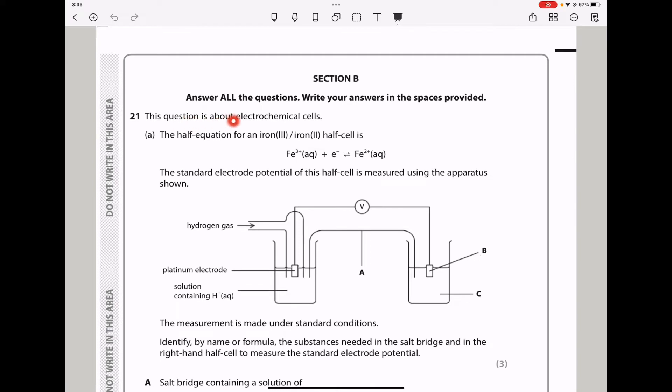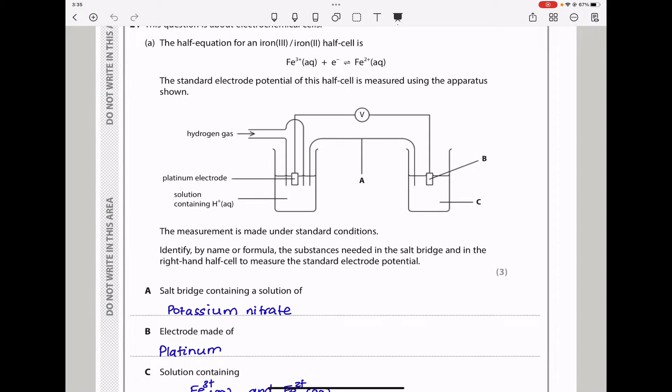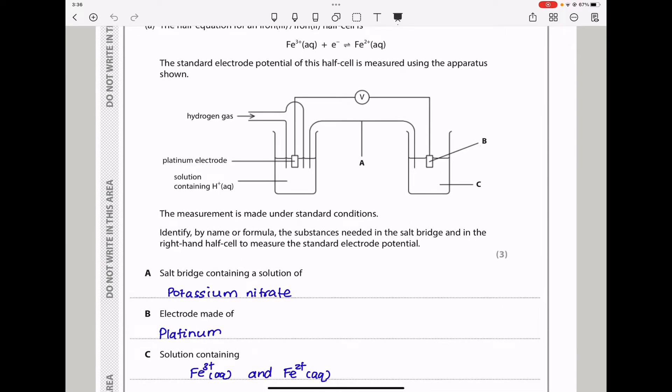Let us begin with Question 21. This question is about electrochemical cells. The half equation for an Iron3+/Iron2+ half cell is shown. The standard electrode potential of this half cell is measured using the apparatus shown with hydrogen gas, platinum electrode, and a solution containing hydrogen ions. The measurement is made under standard conditions: concentration of 1 mol/dm³, temperature of 298 Kelvin, and pressure of 100 kPa.